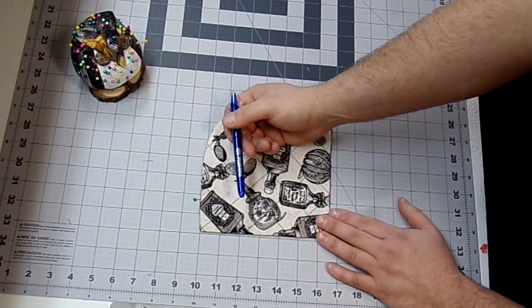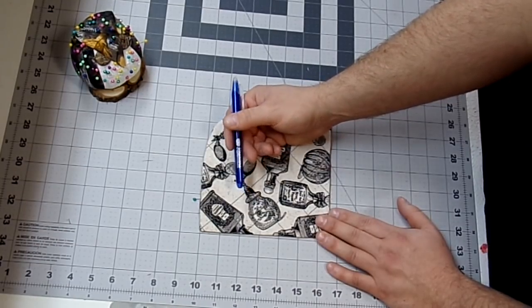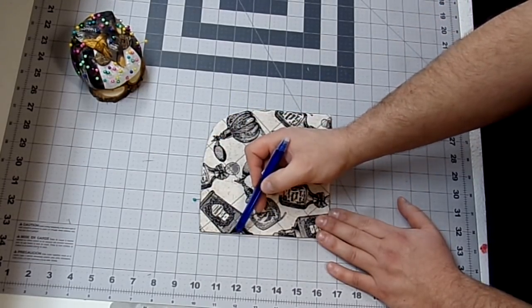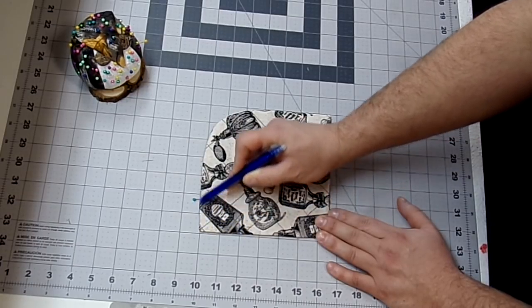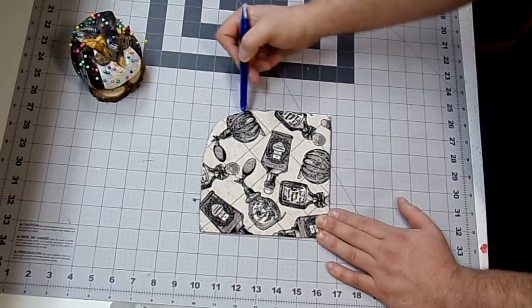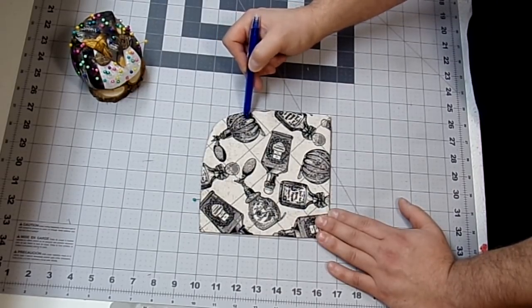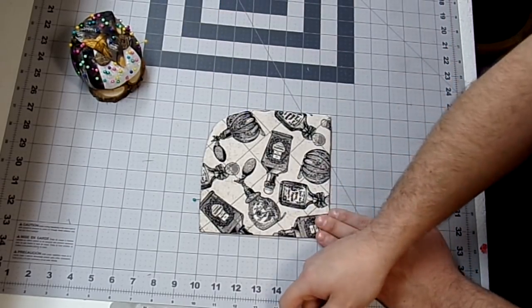Now I'm just going to take this over to my sewing machine. And with an eighth inch seam allowance, I'm going to topstitch starting at this mark, backstitching. I'm going to go up, around, until I get to my other mark and backstitch. Meet you over at the sewing machine.